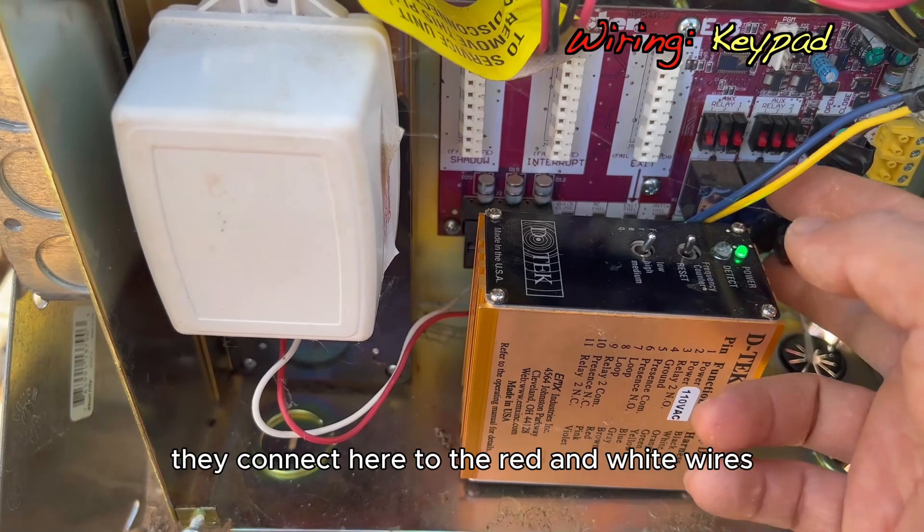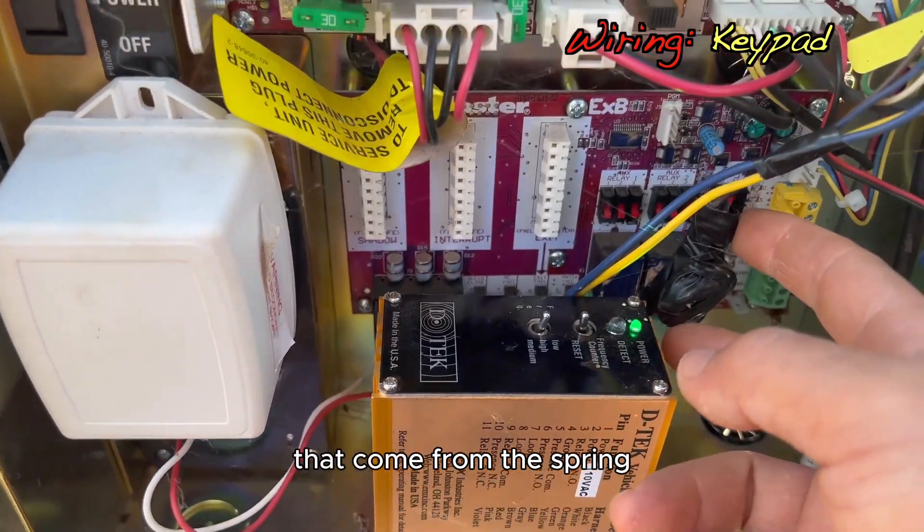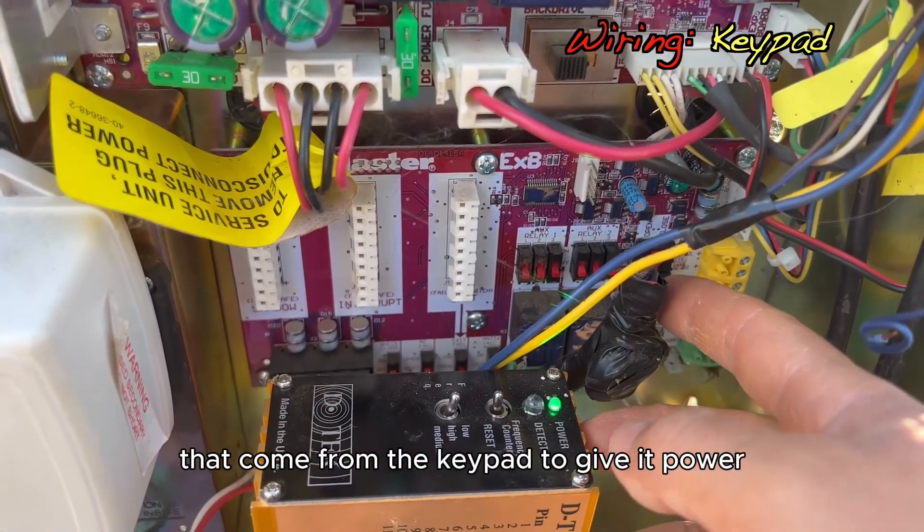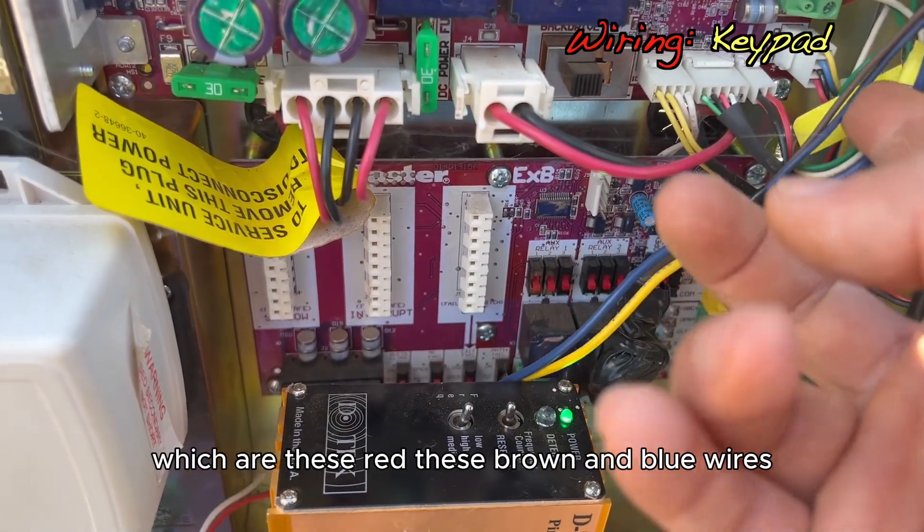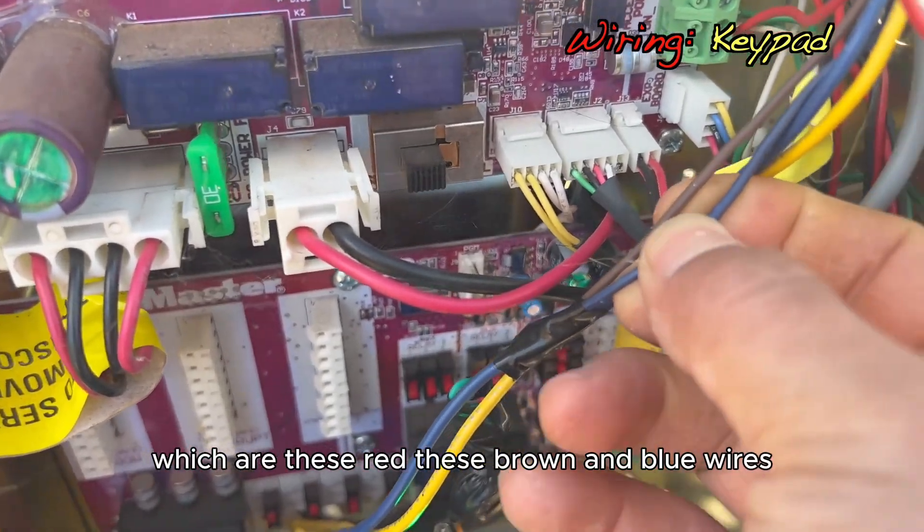They connect here to the red and white wires that come from the spring, they come from the keypad to give it power. And that leaves us with two more wires, which are these brown and blue wires.